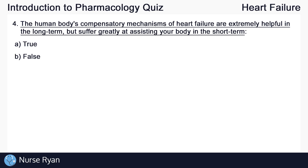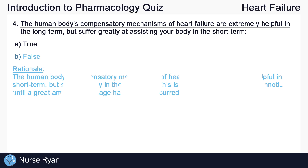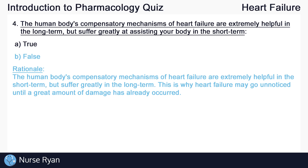Question number four: the human body's compensatory mechanisms of heart failure are extremely helpful in the long term, but suffer greatly at assisting your body in the short term. The answer here is B, false. The human body's compensatory mechanisms of heart failure are extremely helpful in the short term, but suffer greatly in the long term. This is why heart failure may go unnoticed until a great amount of damage has already occurred. Basically, the body is good at maintaining the problem, but only for so long before it can no longer keep up.